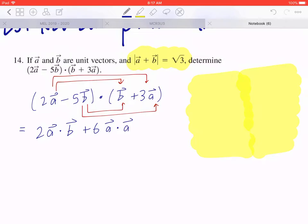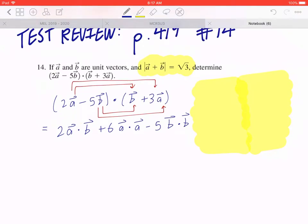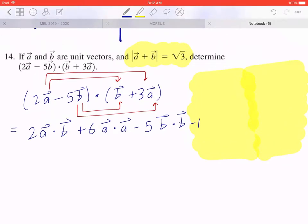Likewise if you look at the bottom arrows, negative 5 times 1 is negative 5b · b, and if you look at the last part, it's going to be negative 5 times 3, so negative 15b · a.